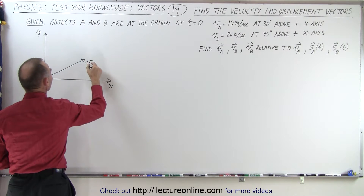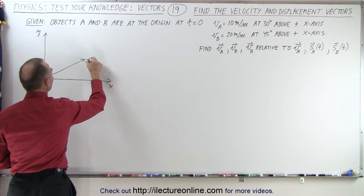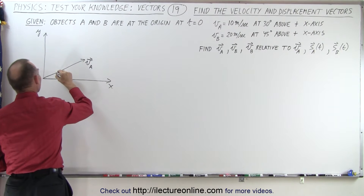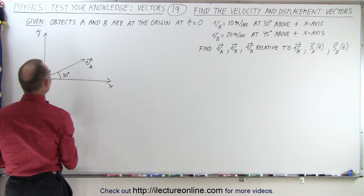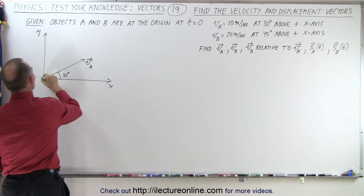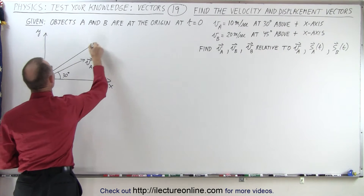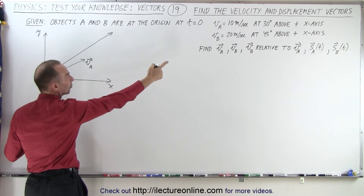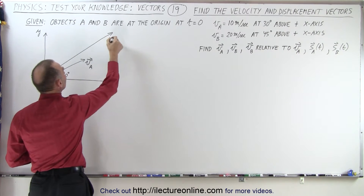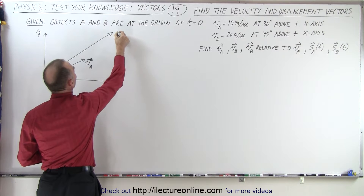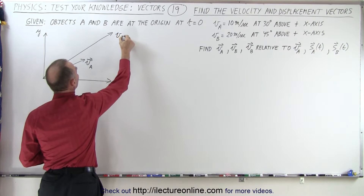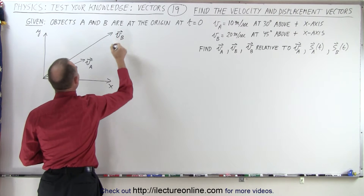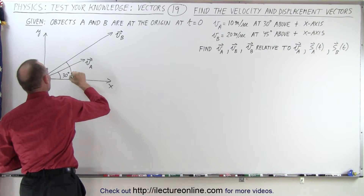There's velocity vector A — it makes an angle of 30 degrees with the positive x-axis. And there's velocity vector B, which is a much bigger vector because it's twice the magnitude, making an angle of 45 degrees.